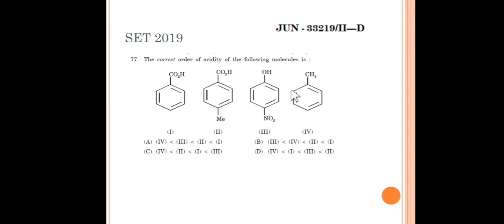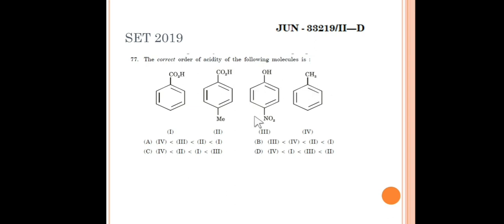Among the compounds, phenol is a weak acid and toluene is neutral. Among the two carboxylic acids, the one without a methyl group is most acidic, since the positive inductive effect of the methyl group reduces acid strength. So the order is: benzoic acid (most acidic), methylbenzoic acid, then phenol, then toluene (least acidic). The correct answer for this question is option A.